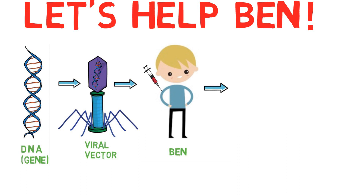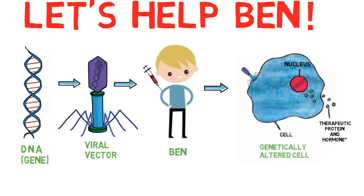After the viral vector is made, it's ready to be given to Ben. It can be given directly into his bloodstream and tissues, or it can be given to his cells in the lab and then the treated cells can be put back into Ben. Once Ben's cells have the new gene, his body makes the missing proteins and then his body makes the missing hormones. No more CAH!